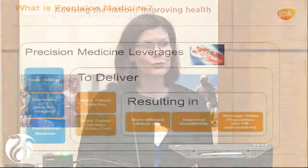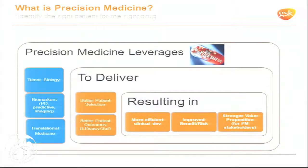When we discuss precision medicine, we're really leveraging our understanding of tumor or cancer biology, the identification of predictive and PD biomarkers, and applying that in a translational medicine setting. The whole aim is to deliver better patient selection and better outcomes for patients, resulting in more efficient clinical development, improved benefit-risk, and a stronger value proposition for all precision medicine stakeholders.